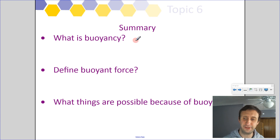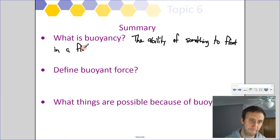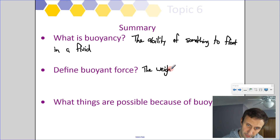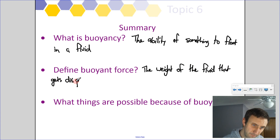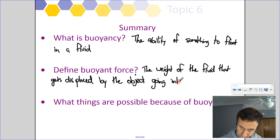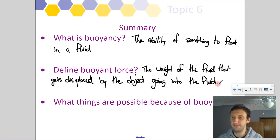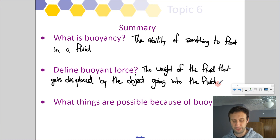So what is buoyancy? Buoyancy is the ability for something to float in a fluid. Buoyant force is equal to the weight of the fluid that gets displaced by the object going into the fluid. What things are possible because of buoyancy? Boats, balloons, blimps, anything that floats — including our ability to swim and life jackets. All of that is possible because of buoyancy.